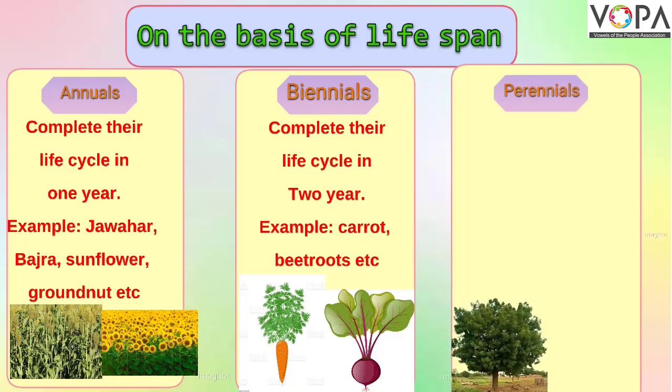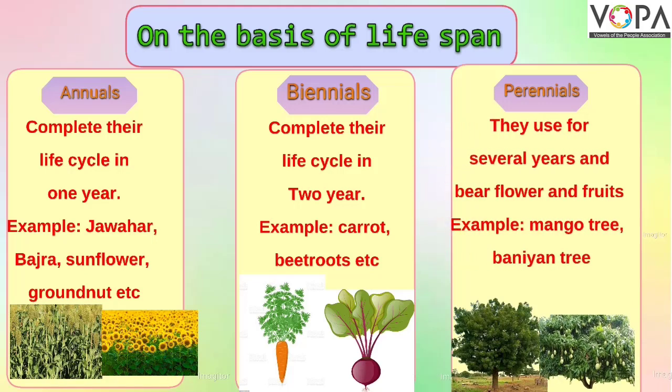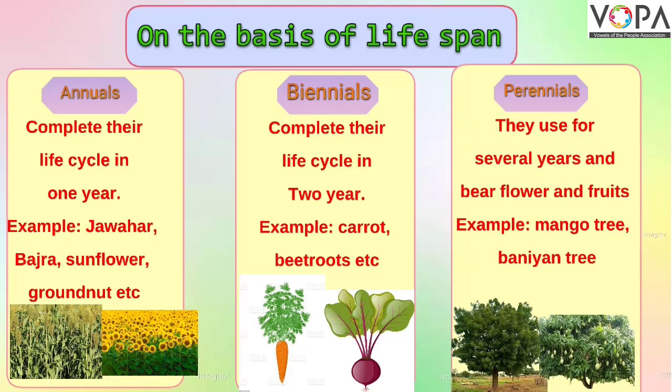Perennials: Some trees like neem, mango, and banyan live for several years and bear flowers and fruits. Plants that live for more than two years are called perennial plants.